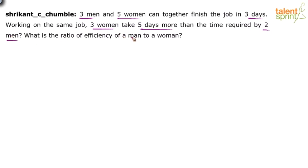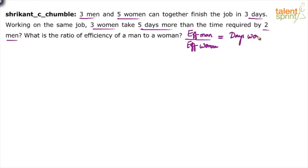Efficiency is nothing but capacity, and capacity is nothing but one divided by the number of days. So the efficiency of a man divided by the efficiency of a woman equals the number of days required by a woman divided by the number of days required by a man. If you take more days, your capacity is less; if you take fewer days, your capacity is more.